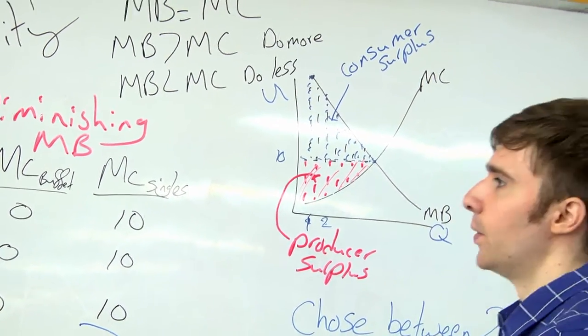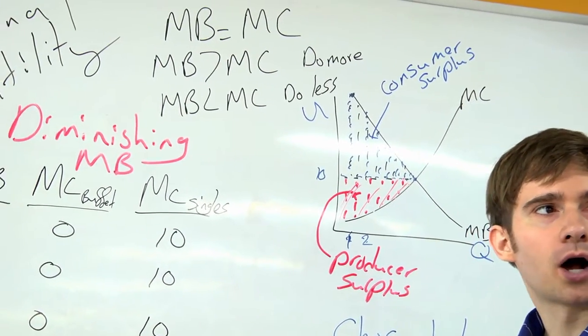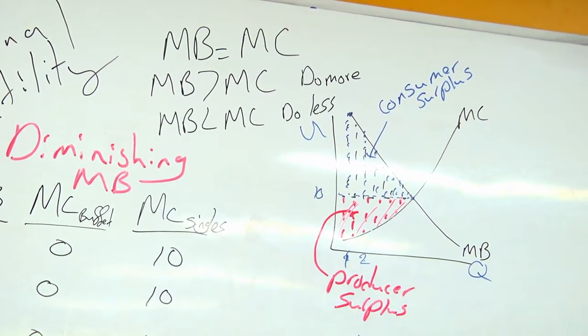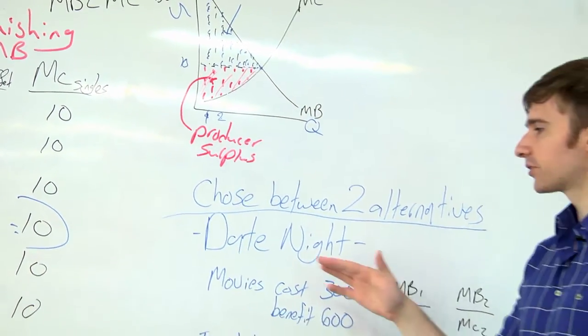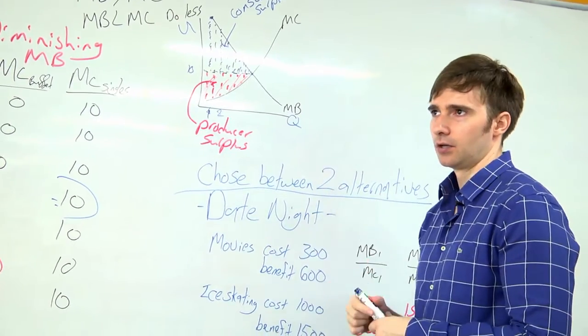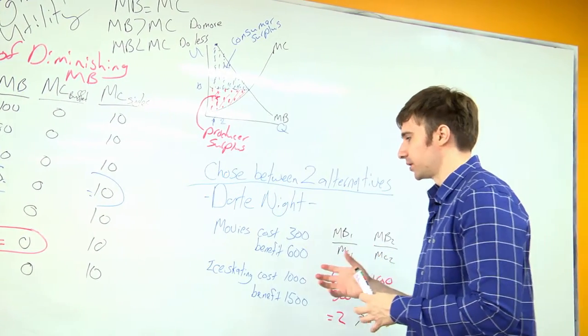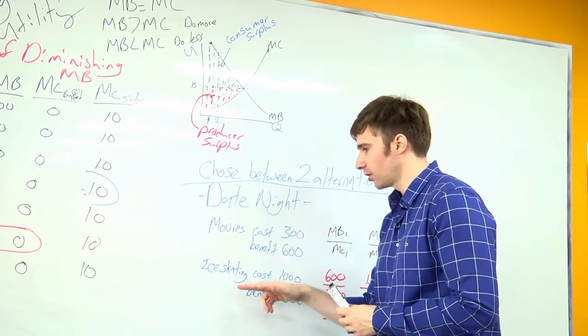Finally, we can use marginal benefit and marginal cost to make a decision between two alternatives. So for example, let's say you have a date night with your boyfriend or girlfriend. You're deciding should you go to the movies or ice skating.